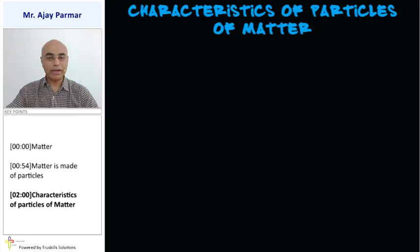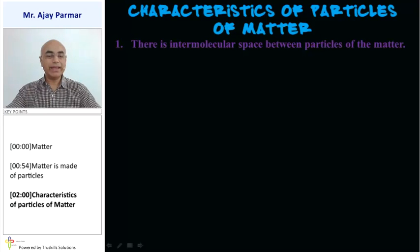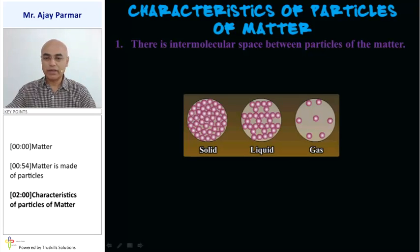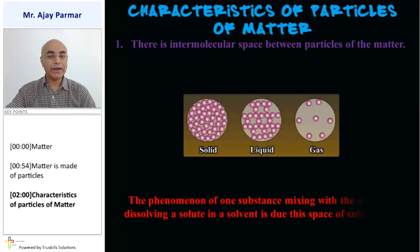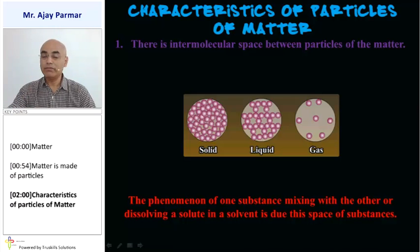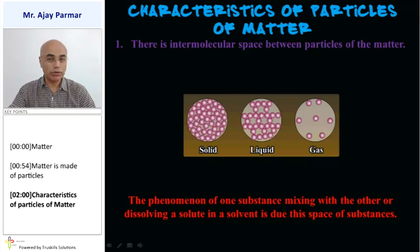What are the characteristics of the particles of the matter? The first one is that they have intermolecular space in between them. For example, in solids, liquids, and gases. The solids have very less intermolecular space. The liquids, a little bit more, and the gases, the maximum. This space helps in mixing of two different substances. That means dissolving a solute in the solvent. That we shall discuss a little bit later in this particular chapter, but it helps in the dissolution of solute into the solvent.